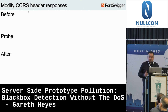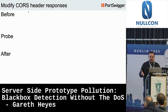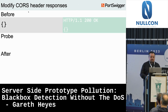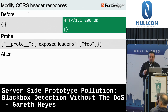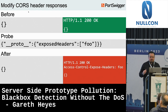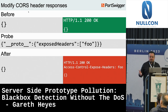Looking at other modules, the CORS module is a good target as it's commonly used with API endpoints. We send a probe that alters the exposed headers configuration by adding an array with 'foo'. When we send the request again, we get an 'Access-Control-Expose-Headers' response header with that value — you know prototype pollution has occurred because you can control this header. This technique is in the scanner.